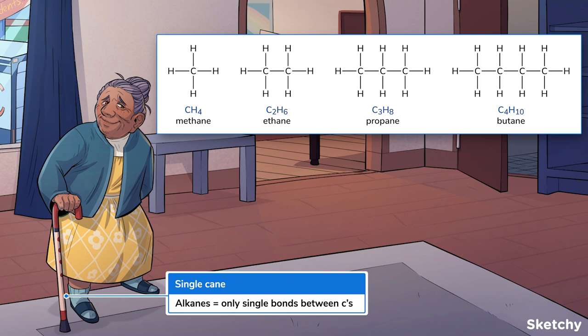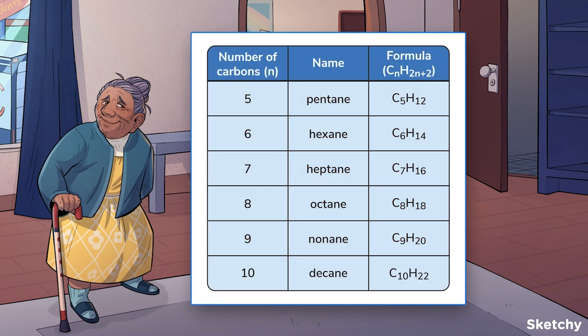CH4, with one carbon, is methane. A two-carbon chain is ethane. Three carbons is propane. And four carbons is butane. The pattern continues. All alkane names end in "-ane", A-N-E.